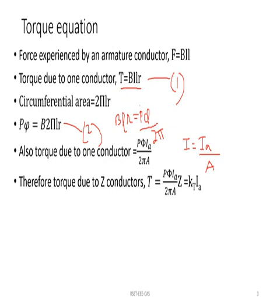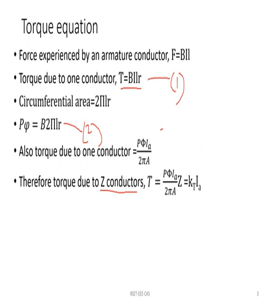This is torque due to one conductor. For Z total conductors, total torque will be T equal to P phi by 2 pi A into Ia into Z, where Z is the total number of conductors. In this expression for torque, all terms except Ia can be taken as constant. So P phi Z by 2 pi A is taken as constant KT, and torque becomes T equal to KT into Ia.